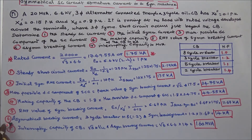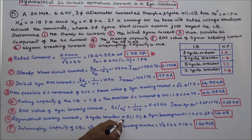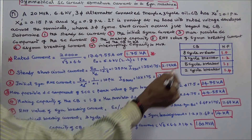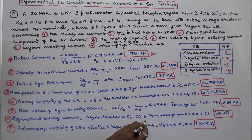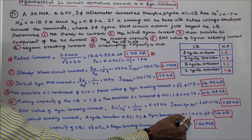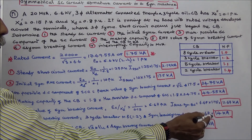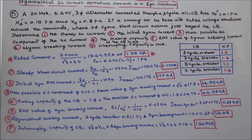Sixth is the asymmetrical breaking current. That equals the 3-cycle breaker multiplication factor of 1.2 multiplied by the symmetrical breaking current. 1.2 into 11.67 equals 14 kA.